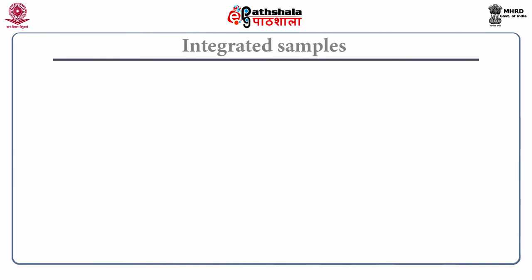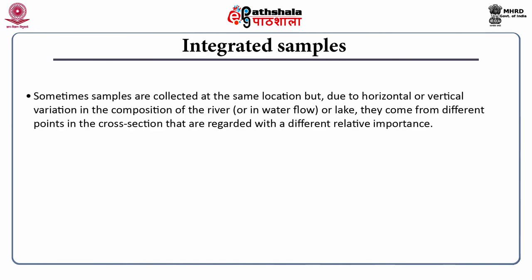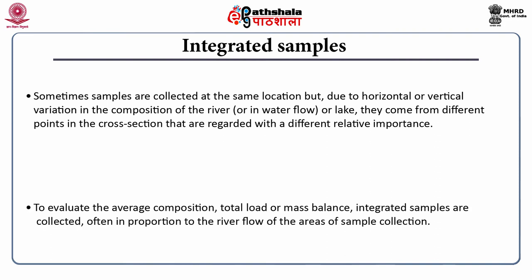The third type is integrated sampling. Sometimes samples are collected at the same location but due to horizontal or vertical variation in composition of the river or lake, they come from different points in the cross-section regarded with different relative importance. To evaluate the average composition, total load, or mass balance, integrated samples are collected, often in proportion to the river flow or the area of sample collection.